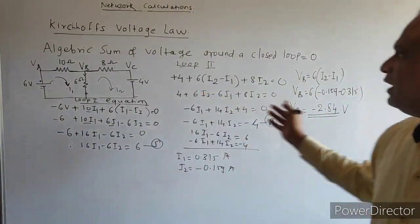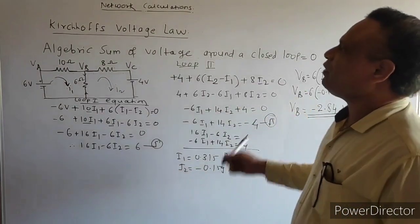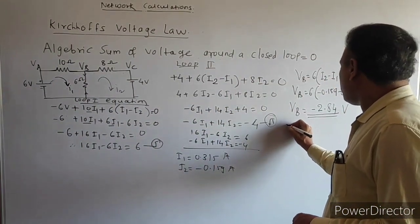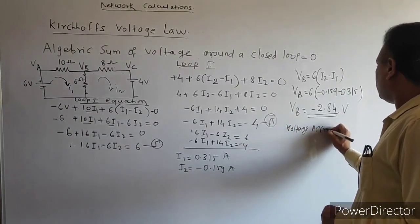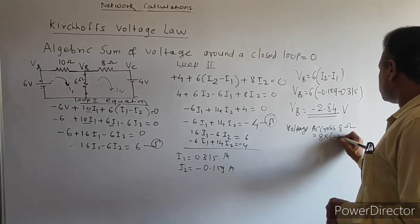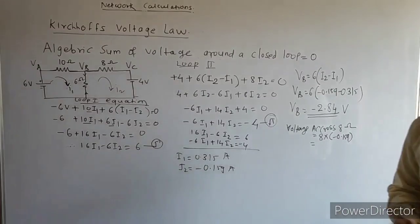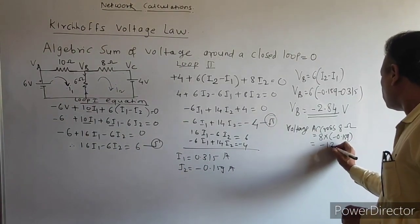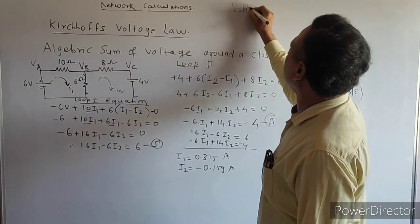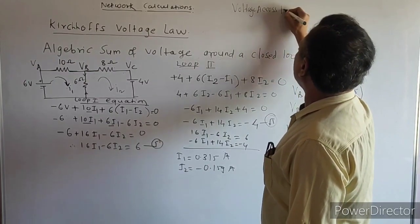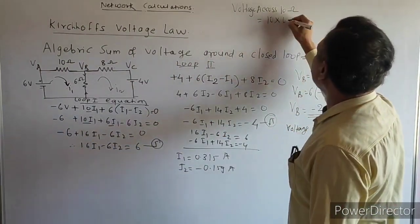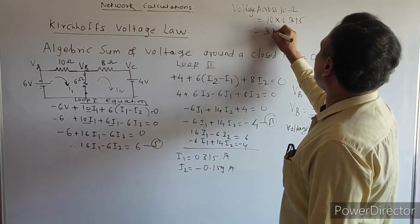The same problem has been solved using Kirchhoff's voltage law. If the voltage across the 8 ohm is asked, the current through it is I2, so voltage equals 8 into I2 equals 8 into minus 0.159 equals minus 1.272 volts. For the 10 ohm resistor, voltage equals 10 into I1 equals 10 into 0.315 equals 3.15 volts.